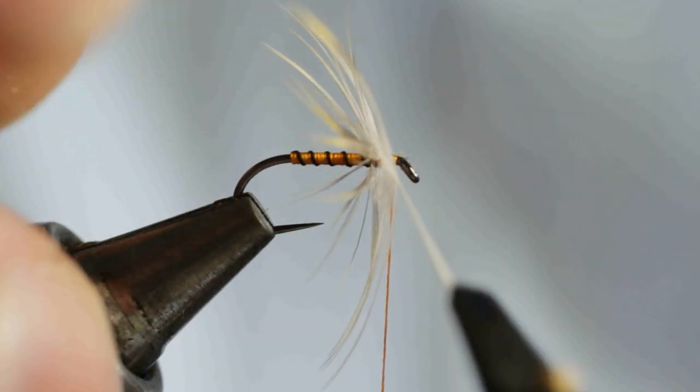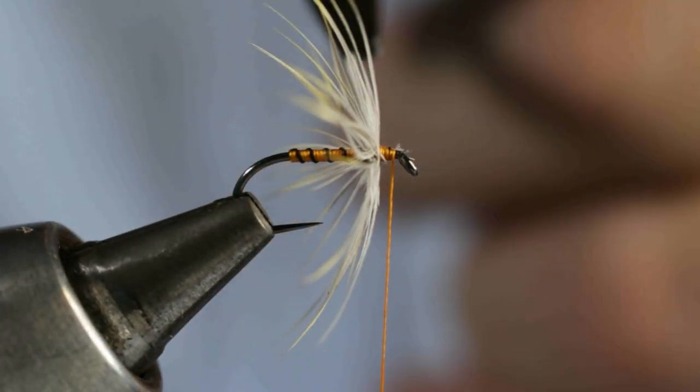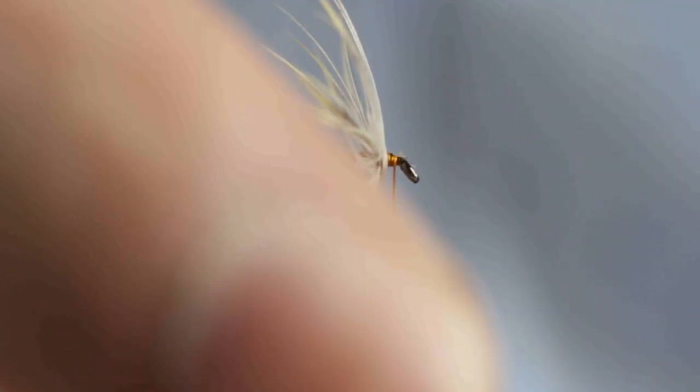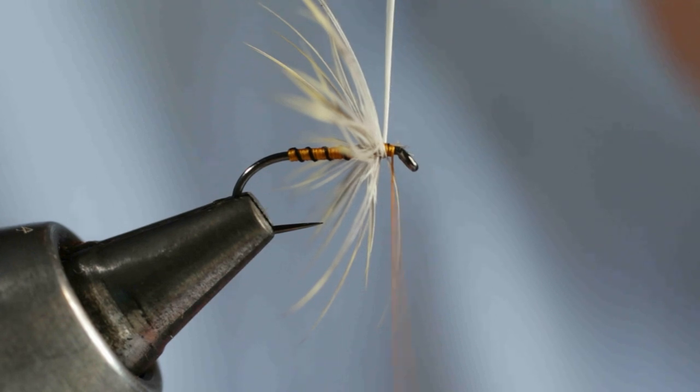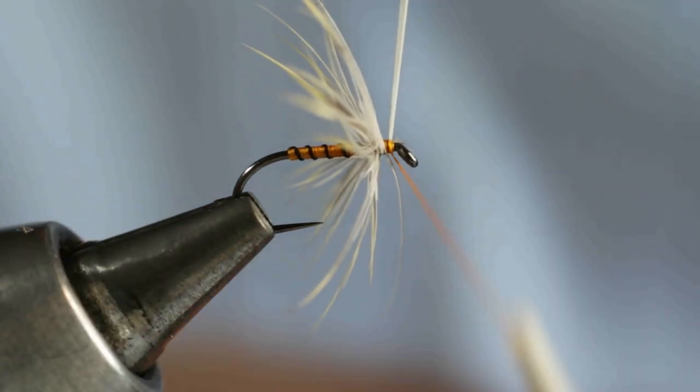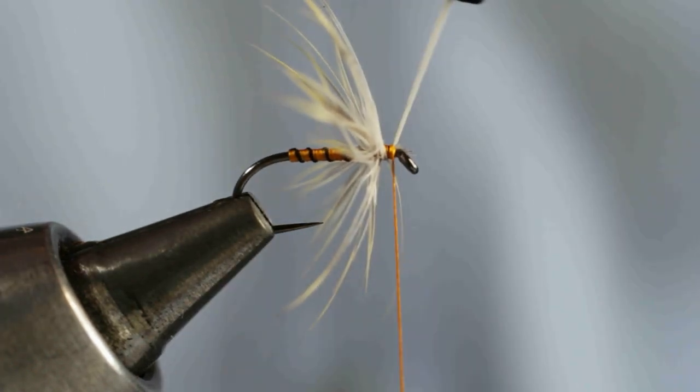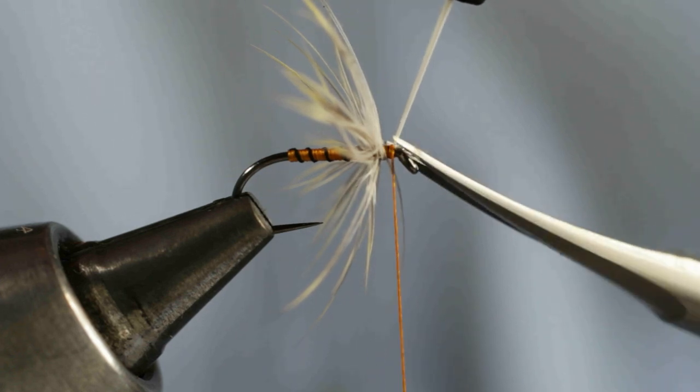A lot of people tie them overly sparse. Personally I like to go at least two and a half possibly three turns of hackle which gives me a more buggy looking fly and as a trout starts to take the fly the hackle fibers will start to fret away and start to be bit off. So you want a reasonably dense hackle there.